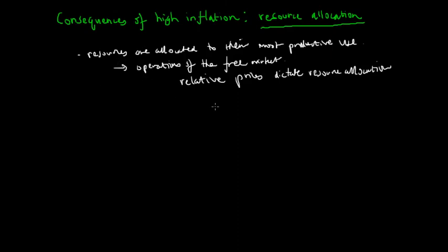This would signify to producers that resources should be allocated into these productive uses because they would satisfy most of consumers' needs and wants. So resources are allocated due to this concept of relative prices. I'm now going to talk about how high inflation can cause resource allocation to be less effective than it would otherwise be in the operation of the free market.